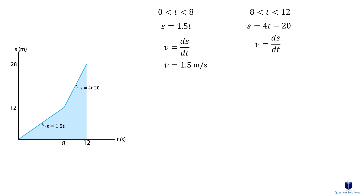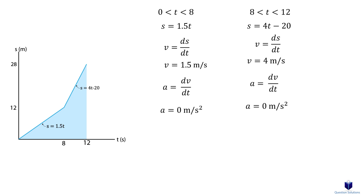Taking the derivative will give you the velocity, and you can plot the new equations on a velocity versus time graph. If the question asks for the acceleration, take the derivative of the velocity equations you just found — so you've taken the derivative two times. Then you can plot the acceleration versus time graph using the new equations.